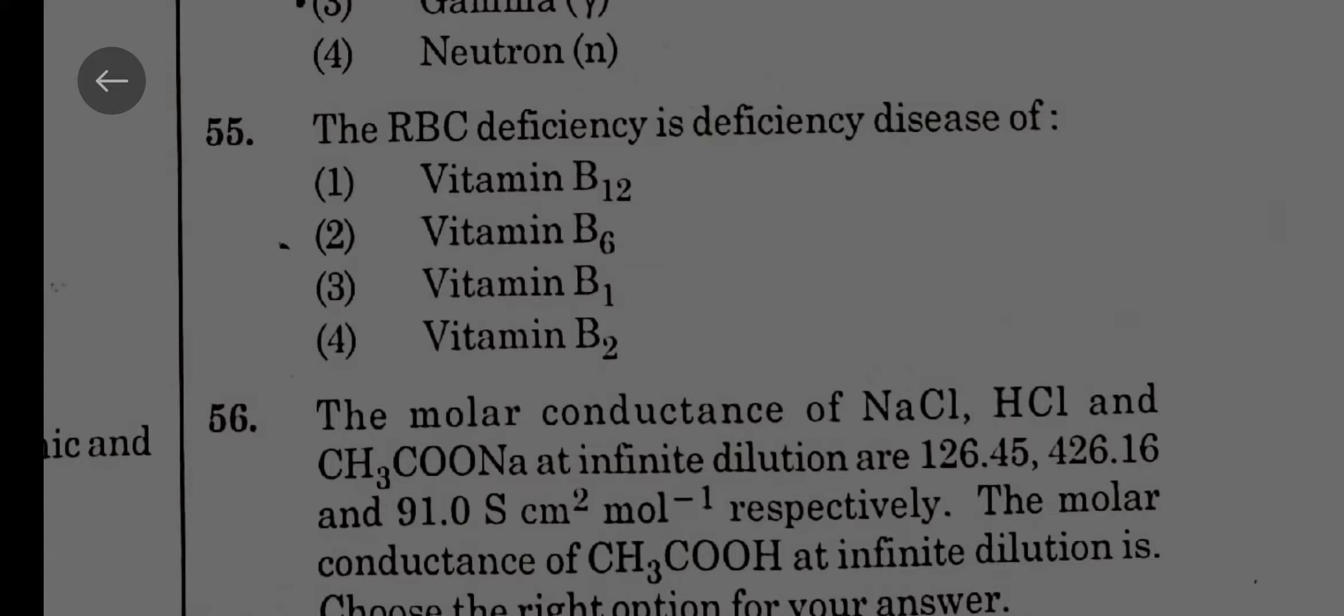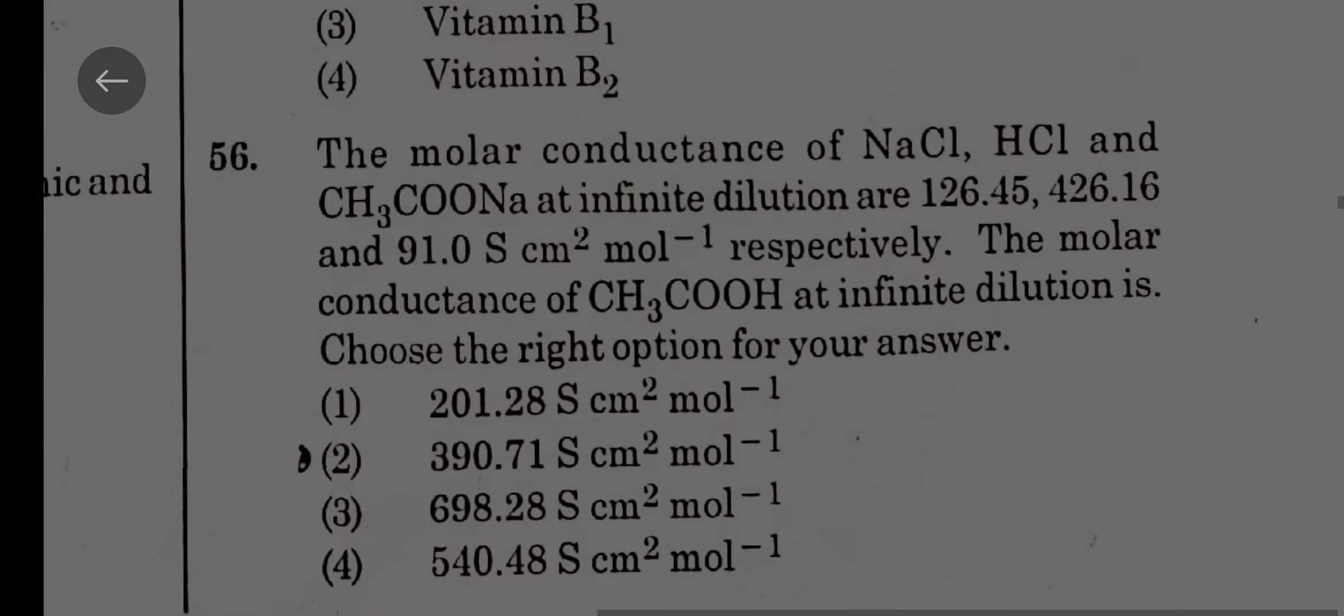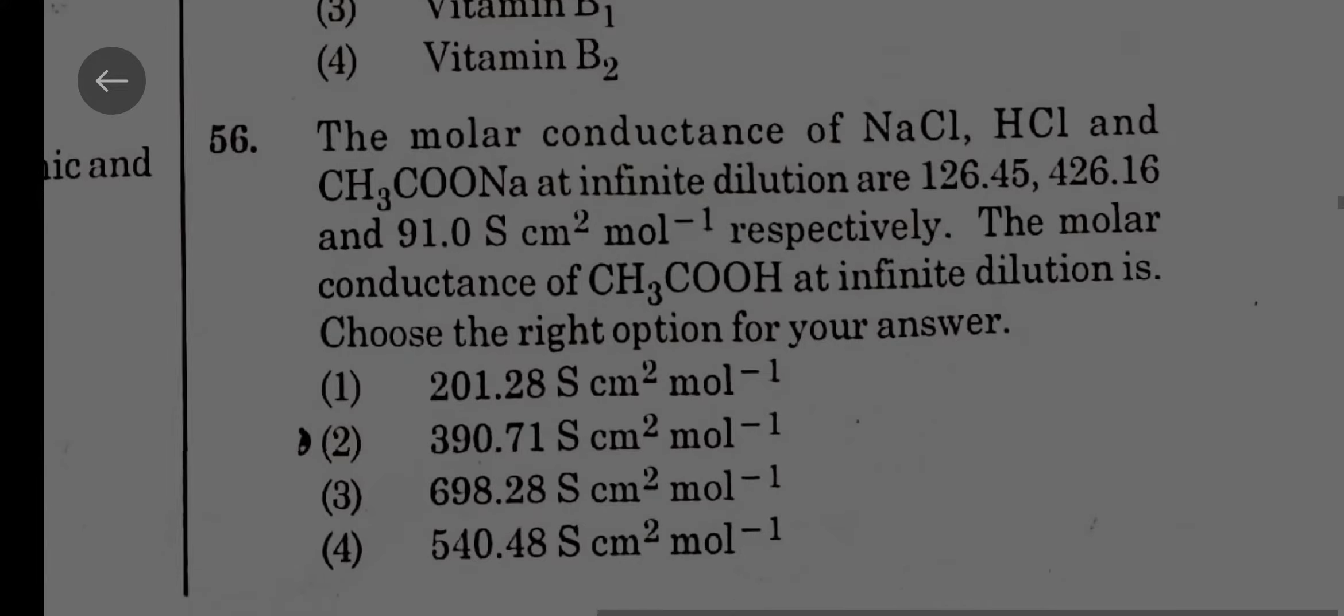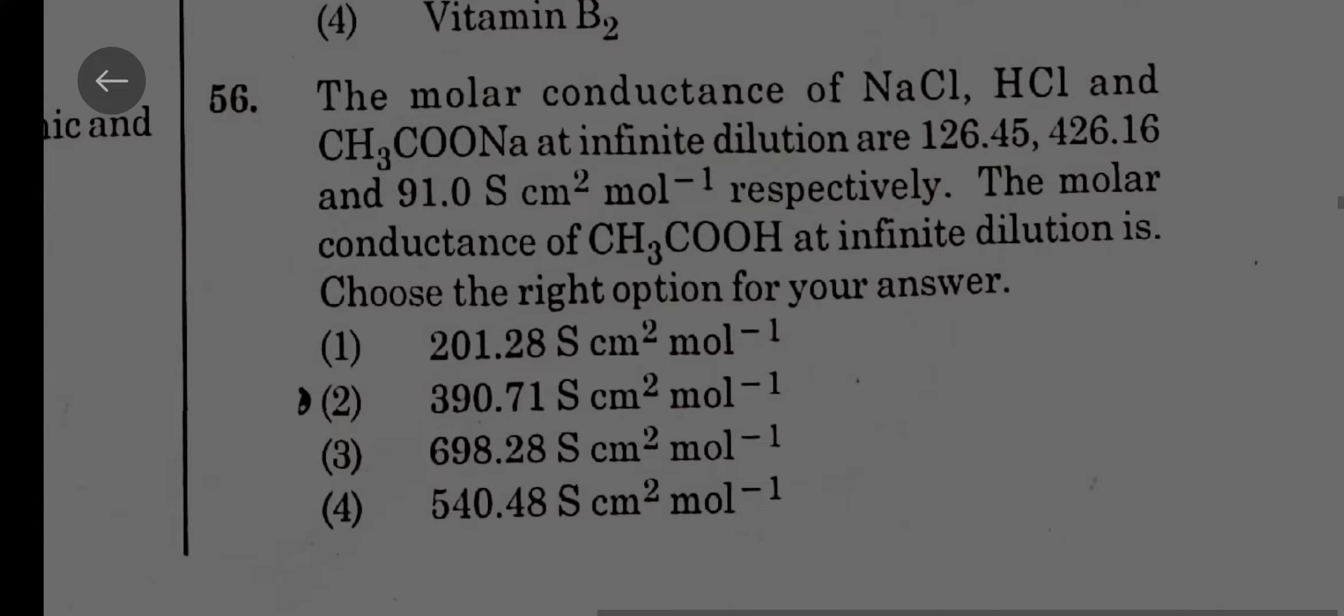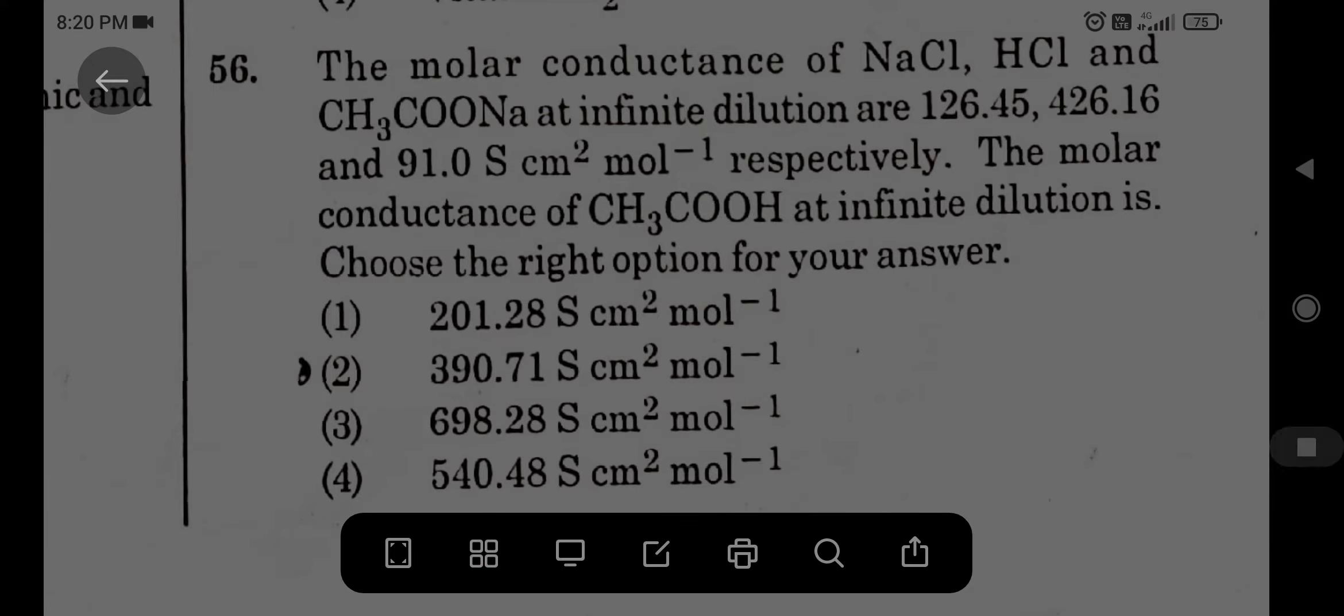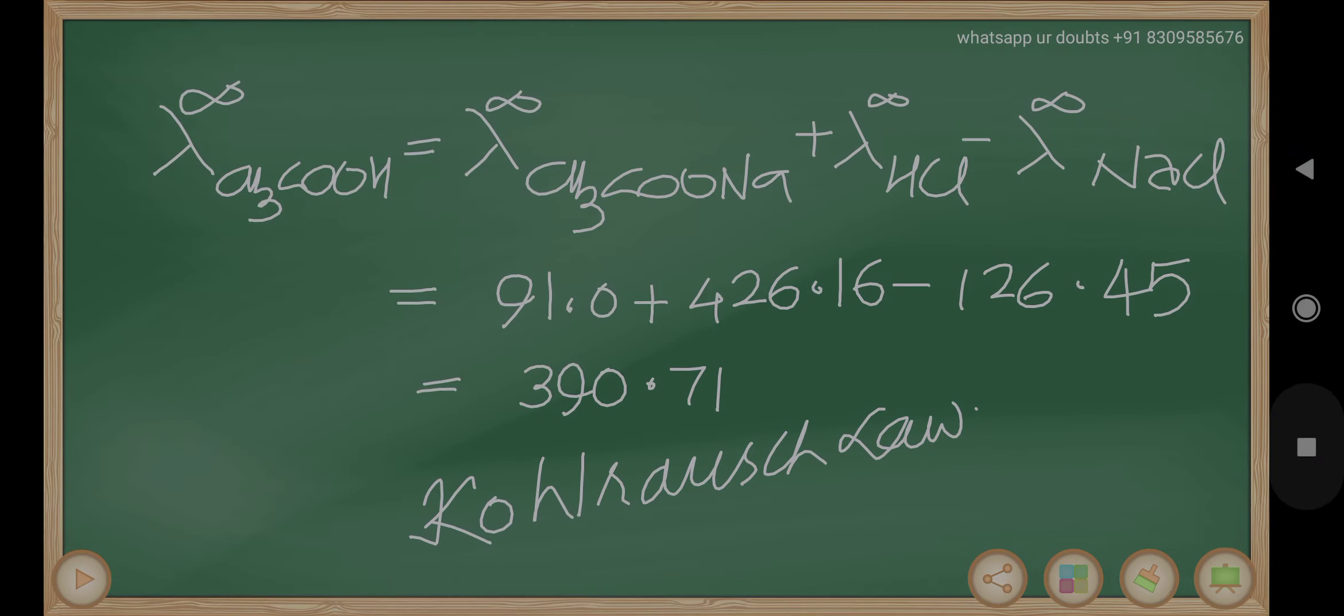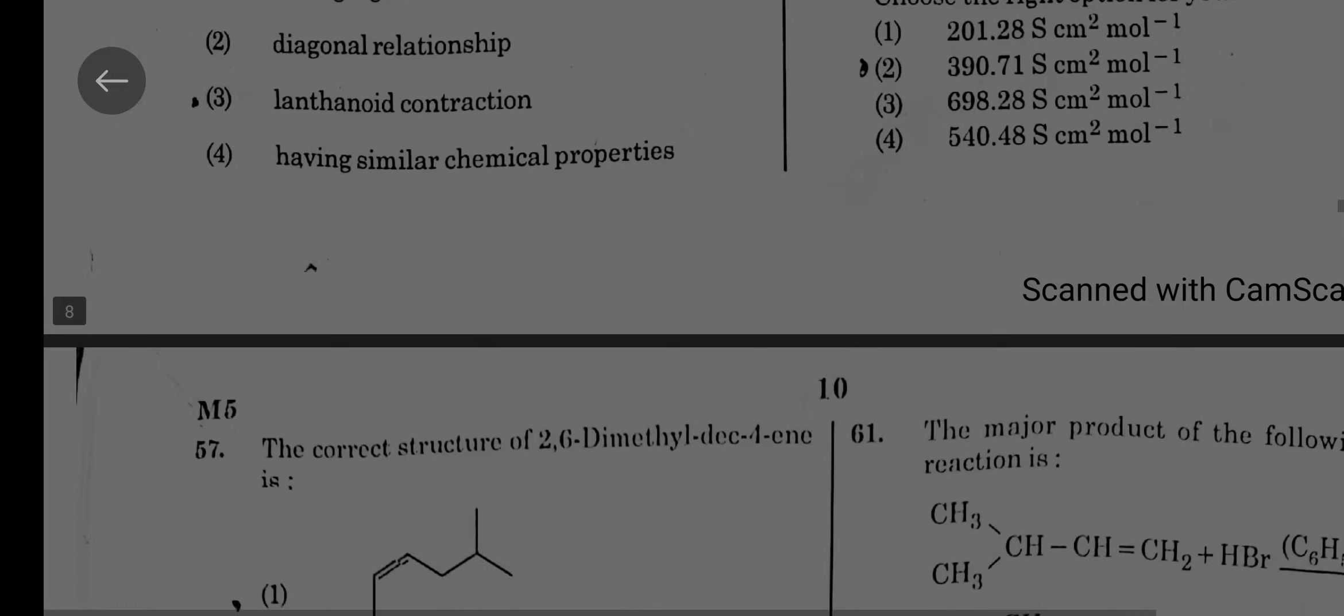The molar conductance of sodium chloride, hydrogen chloride, and sodium acetate at infinite dilution are 126.45, 426.16, and 91.0 siemens centimeter square per mole respectively. The molar conductance of acetic acid at infinite dilution is based on Kohlrausch law. It equals sodium acetate plus HCl minus NaCl, which equals 390.71.